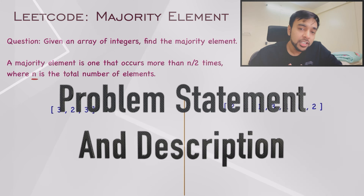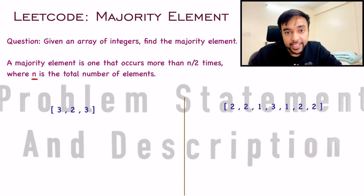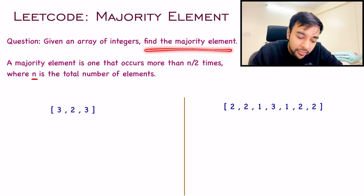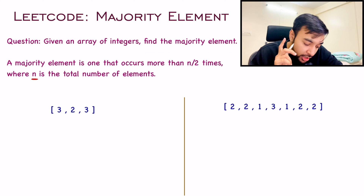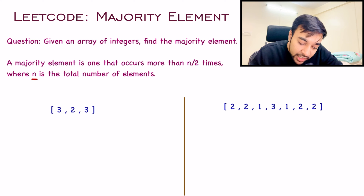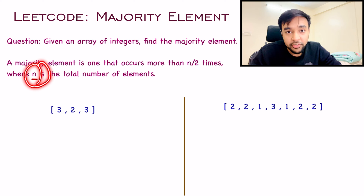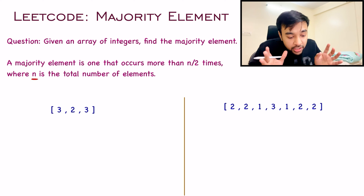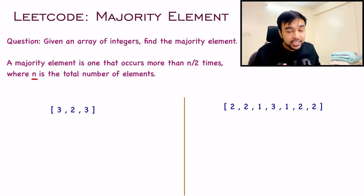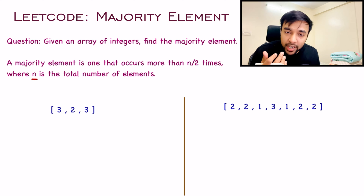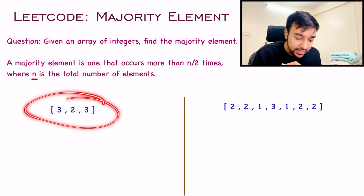First of all, let's make sure that we are understanding the problem statement correctly. In this problem, you are given an array of integers and you have to find the majority element. A majority element is one that occurs more than n by 2 times, where n is the total number of elements present in the array.